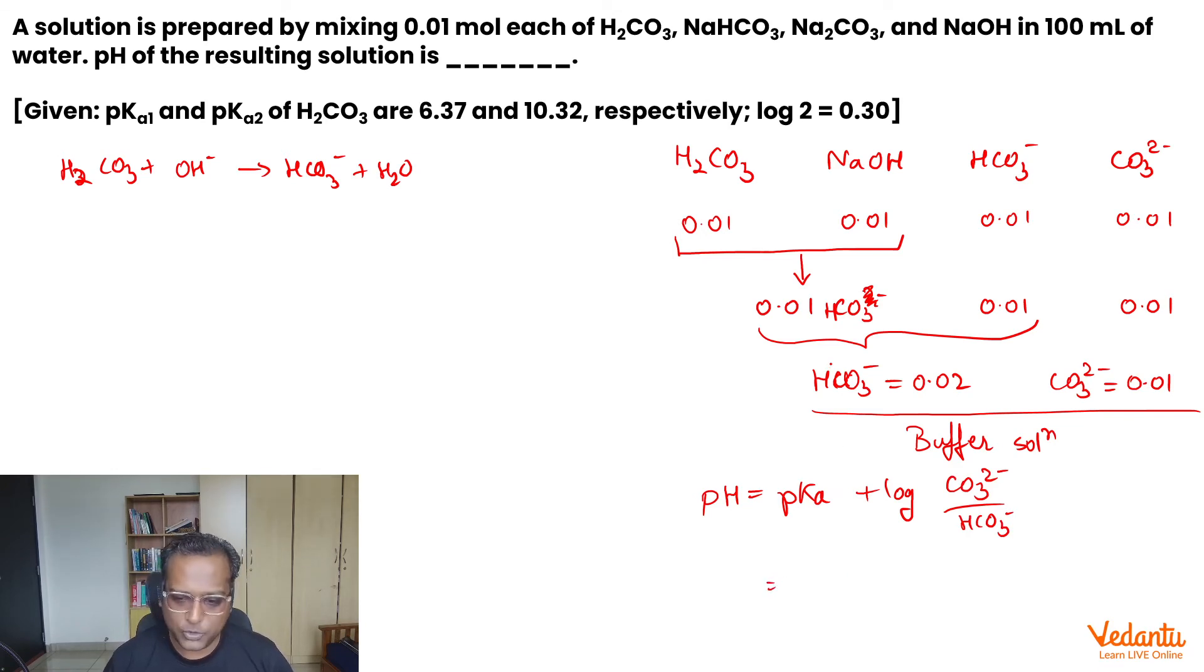Now we have to take in the pKa value of H2CO3 or HCO3 minus. Because HCO3 minus is being used as an acid here, we'll have to take the pKa value of HCO3 minus. That's 10.32 given in the question.